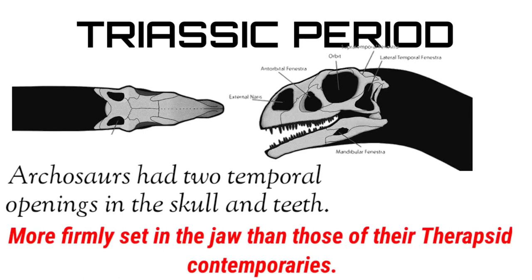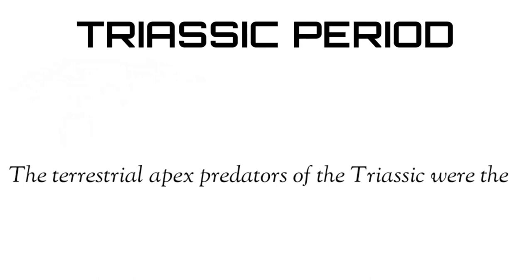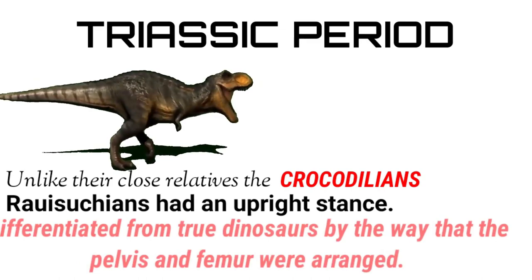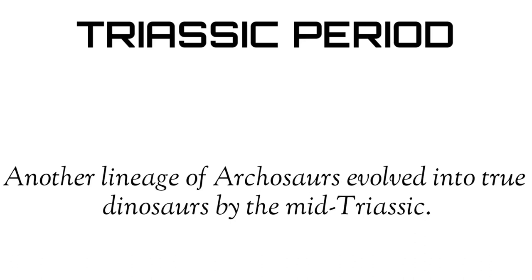Archosaurs had two temporal openings in the skull and teeth that were more firmly set in the jaw than those of their therapsid contemporaries. The terrestrial apex predators of the Triassic were the Rauisuchians, an extinct group of Archosaurs. Unlike their close relatives the crocodilians, Rauisuchians had an upright stance, but are differentiated from the true dinosaurs by the way that the pelvis and femur were arranged.